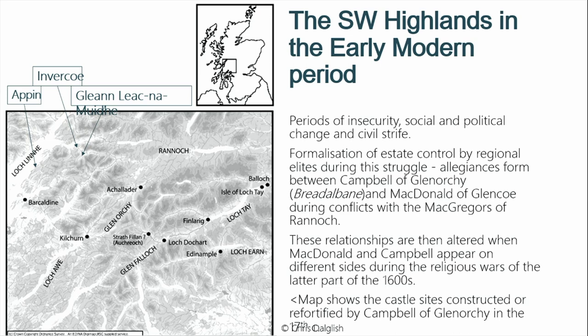For much of the 1600s, the MacDonalds and Campbell of Glenorchy are in a fairly happy agreement. MacDonald of Glencoe signs a treaty of manrent and protection with Campbell of Argyll, and essentially does his dirty work in clearing the McGregors from various areas of Rannoch. That changes with the religious wars of the latter part of the 1600s, and by 1692, Campbell of Glenorchy is one of the leading instigators of the massacre of the MacDonalds in Glencoe — one of the most disruptive and iconic events in the history of this area.